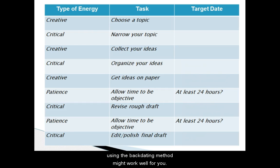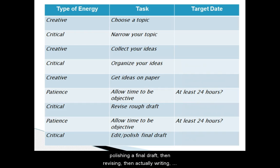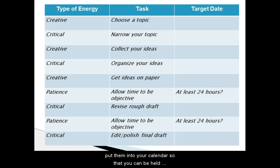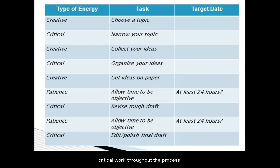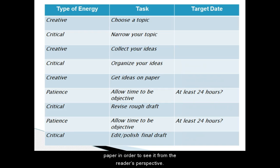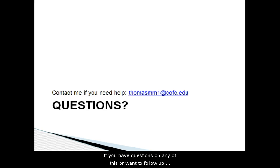If you're a procrastinator, the backdating method might work well for you. First, set a date by which you need to be editing or polishing a final draft, then revising, then actually writing, and so on back to the present where you choose your topic. Put these dates into your calendar so you can be held accountable. Also notice the different types of energy it takes to write a paper — research writing has you shifting from right-brain creative work to left-brain critical work throughout the process. Don't forget to be patient and let the paper sit for a while; you need distance to see it from the reader's perspective. If you have any questions or want to follow up, feel free to email me or come by the CSL's Writing Lab. Best wishes!